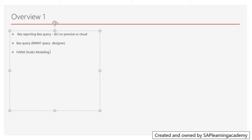All the classic objects — such as creation of InfoObject, InfoCube, or MultiProvider — everything has to be done in HANA modeling and converted into new types. The DSO will be converted into ADSO, and InfoCube will also be converted into ADSO. Similarly, MultiProvider or InfoSet will be converted into a Composite Provider (CP). These are the basic changes that have to be done first.